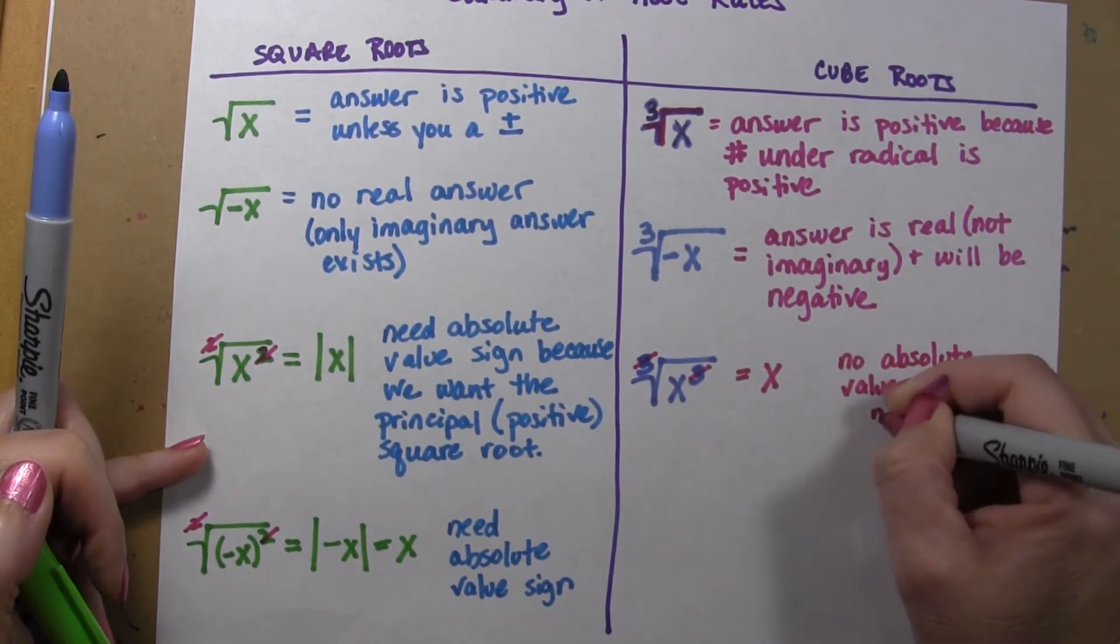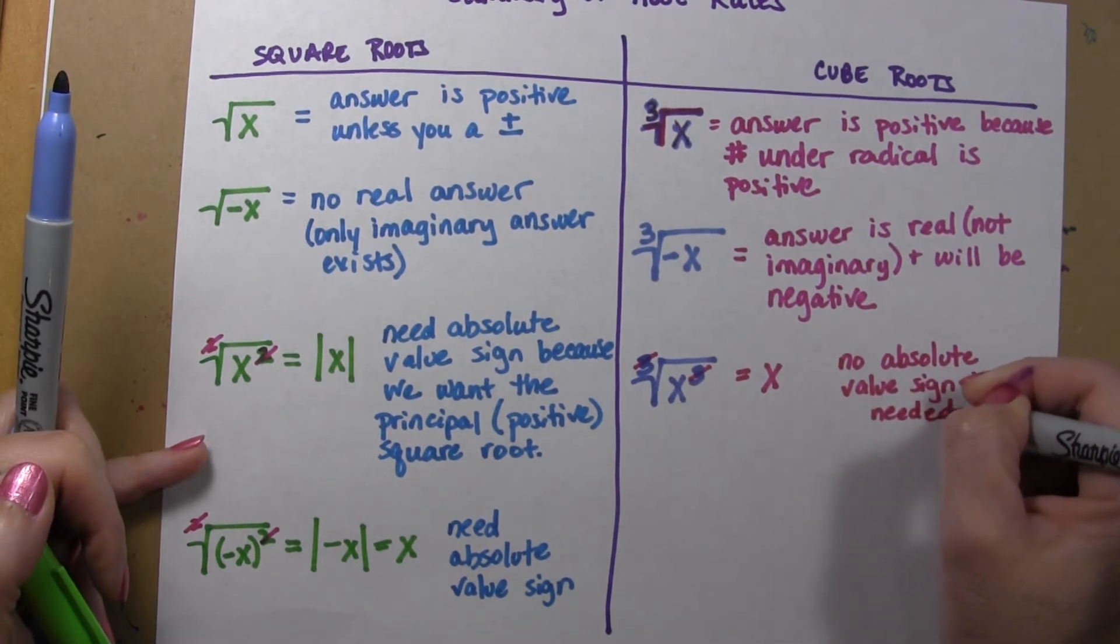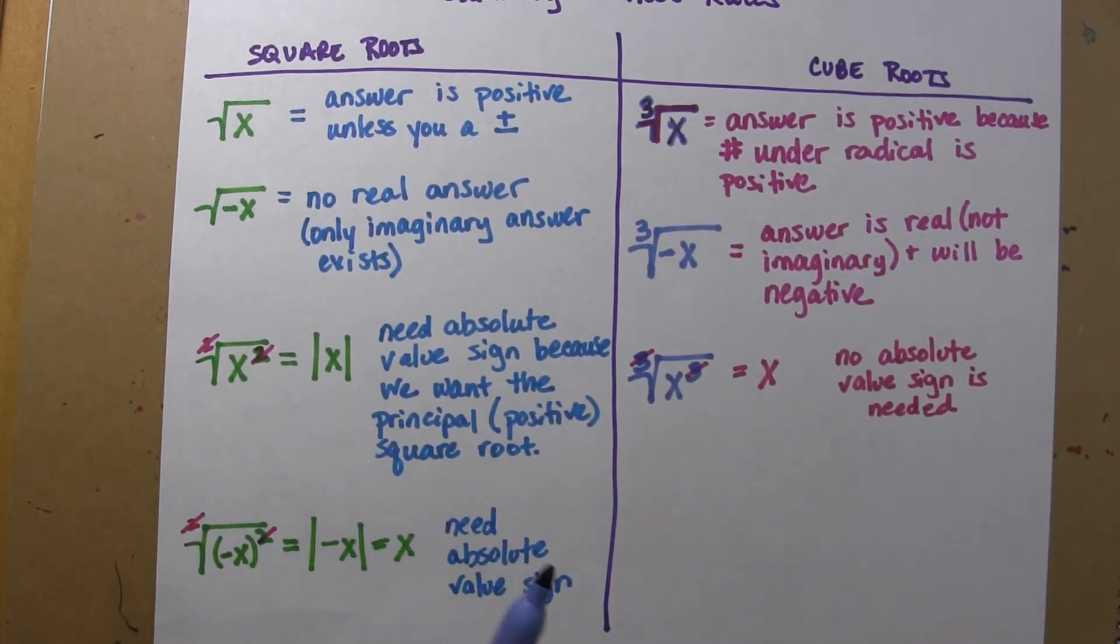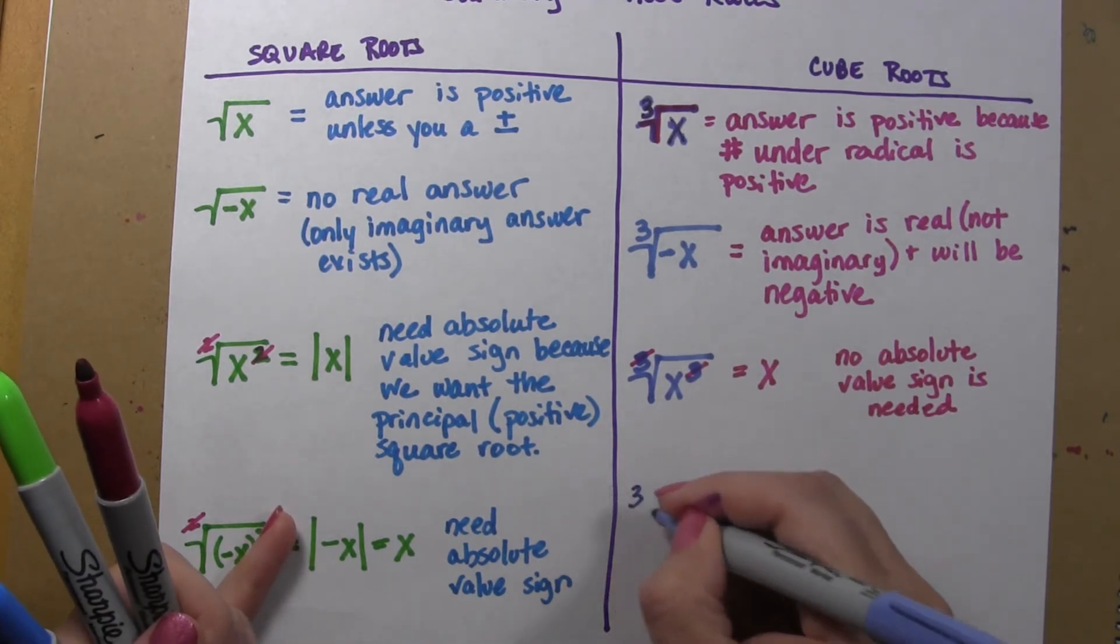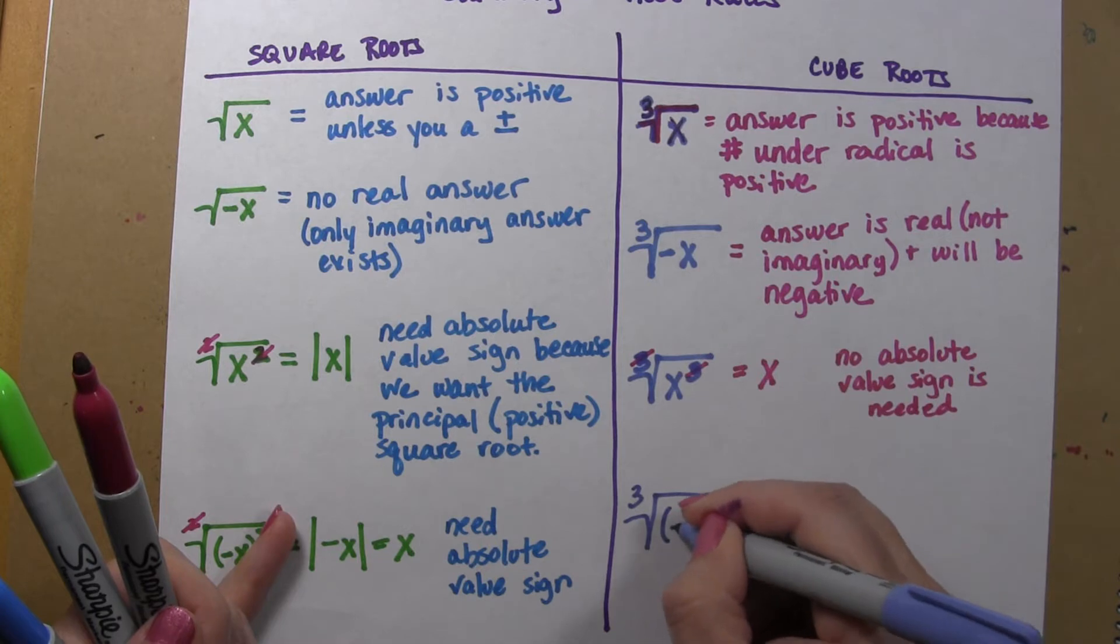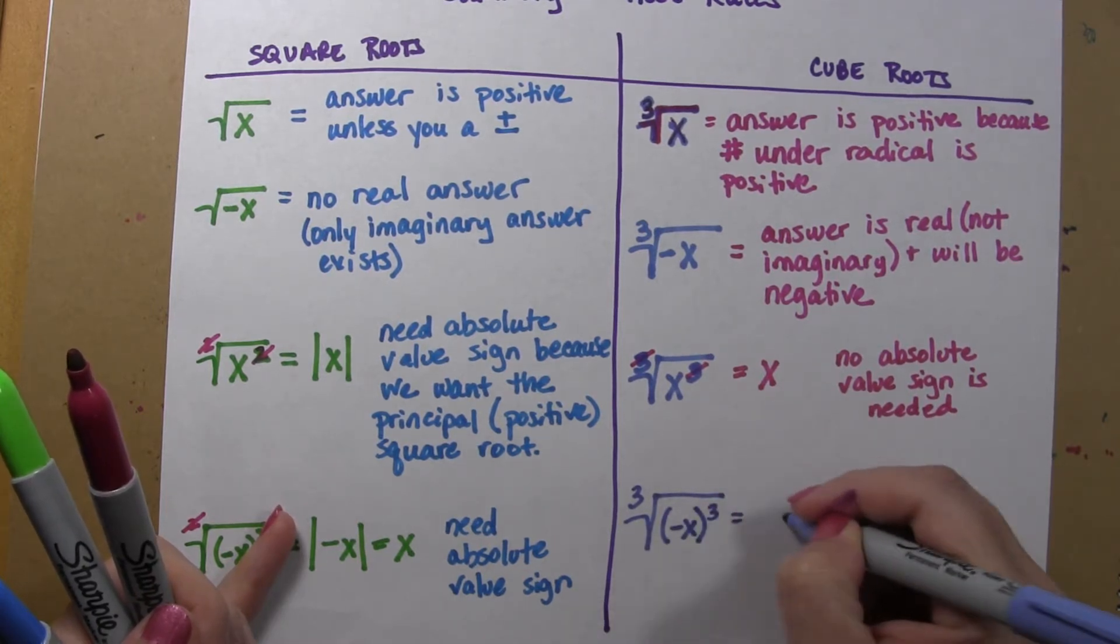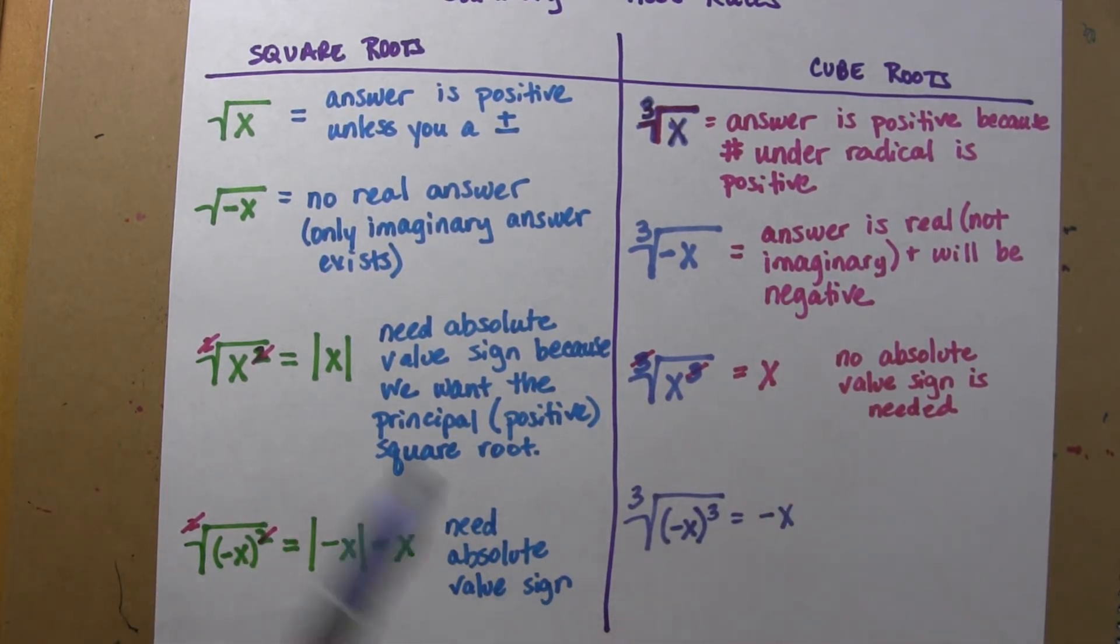And if you take the third root of negative x to the third, you are just going to get negative x.